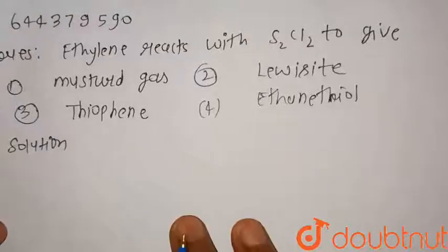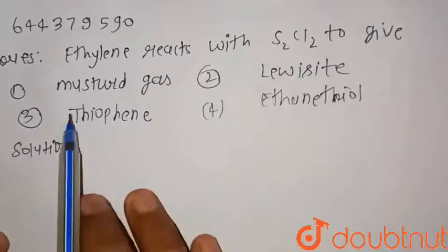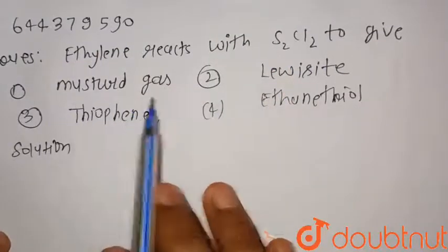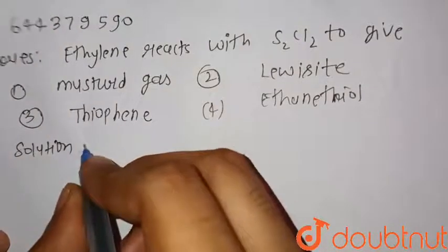Hello everyone, consider the given question: ethylene reacts with S2Cl2 to give - so four compounds are given. First one is mustard gas, second is lewisite, third is thiophene, and fourth is ethane thiol. So we know that ethylene is...